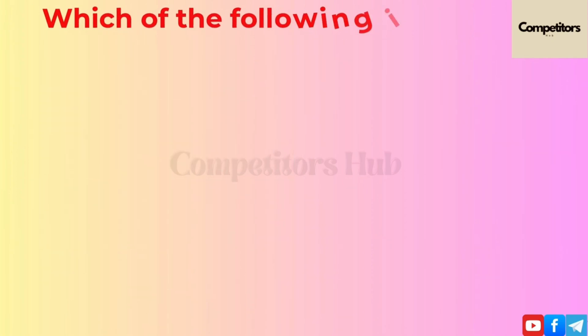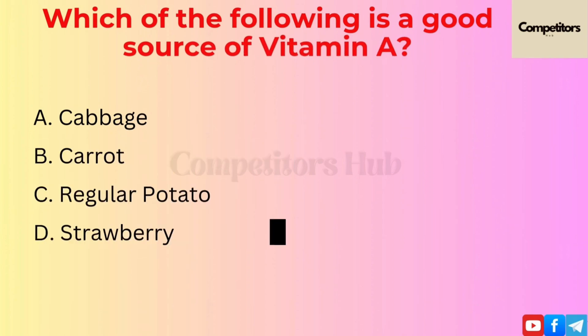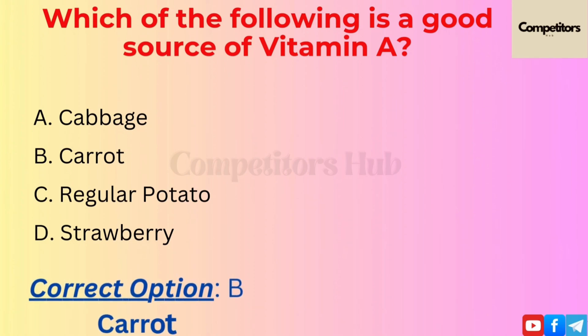The next question is: which of the following is a good source of vitamin A? Option A: Cabbage. Option B: Carrot. Option C: Regular Potato. Option D: Strawberry. The correct option is B, Carrot.